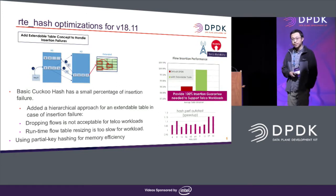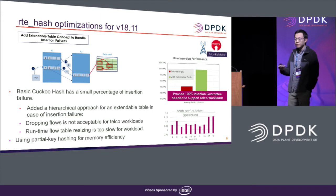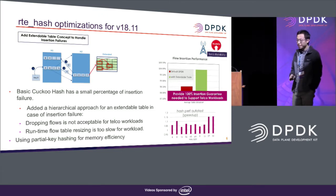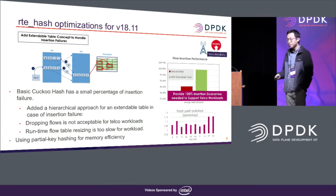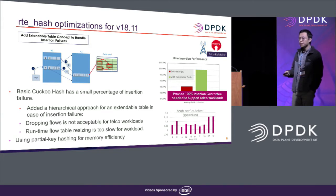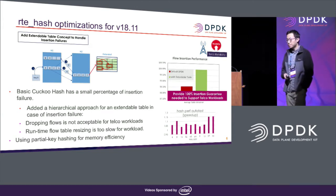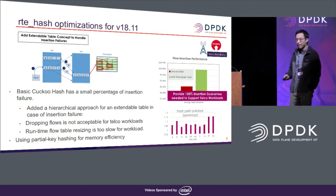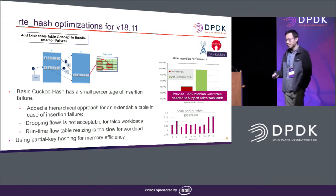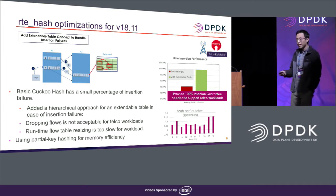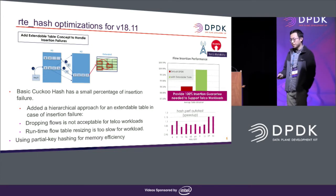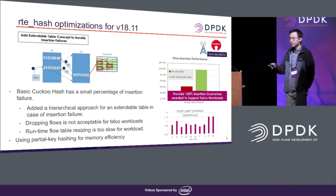In the recent version of DPDK 18.11, we contributed extra features and improvements to the current RTE hash library. One is adding an extendable table feature, which adds a linked list to the current hash table. This meets the requirement from telecom use cases that require reliability — you don't want a hash collision to prevent insertion of a key. Second, we use partial key hashing for memory efficiency, which effectively reduces the memory requirement of RTE hash by half, improving performance.